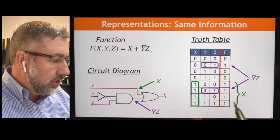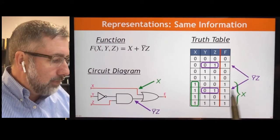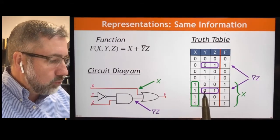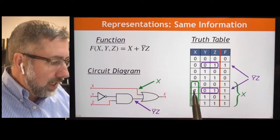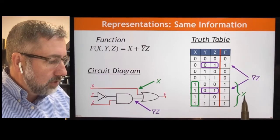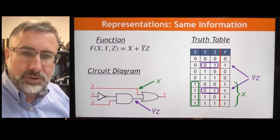So this is different ways of representing the same information, and the information we're representing is this function of three variables that is true in those five circumstances and false in the other three is the kind of thing we're looking at. And we can show that in a few different ways. Here, these notations that I've given show the situations where y bar z is true, and that happens when y is 0 and z is 1. And the situations where x is true, and we can show that in those situations, y bar z or x, those are the terms that are available.